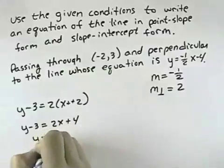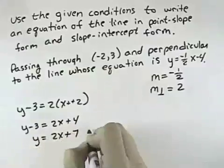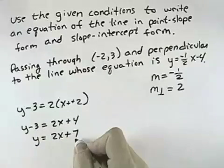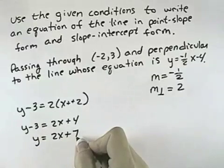To get slope-intercept form, we want to solve for y. So multiplying out the right-hand side, we'd have 2x plus 4. And adding 3 to both sides, we'd have y equals 2x plus 7. And so this would be the form in slope-intercept form of the same line.